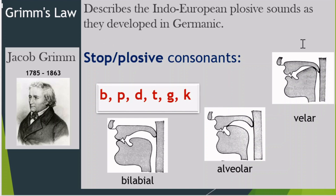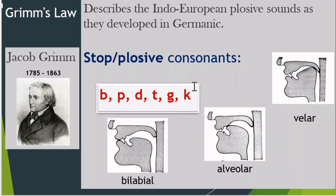All these are called stops because there is a stoppage of the air passage — at the lips, alveolar ridge, or velar area — and then a sudden release. In English the consonant sounds are: b, d, g (voiced) and p, t, k (voiceless or unvoiced). In the production of a voiced sound, the vocal cords are active; in the production of voiceless sounds, the vocal cords are not active — they are withdrawn. That's a little bit of phonetics to brush up our knowledge about what a plosive sound is.